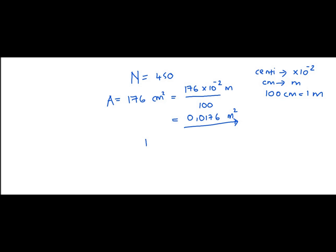We are also provided with the magnetic field: it is a uniform magnetic field of 0.72 teslas. We are not given the magnetic flux — we have to calculate it in webers. We also need the angle theta. We don't know what theta is directly, but we can determine it, and I will show you how.